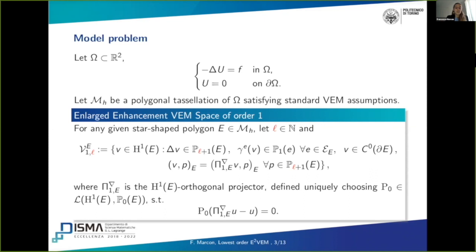We analyze the Poisson problem with the homogeneous Dirichlet boundary condition. In order to state the discrete formulation of the problem, we have to define a polygonal tessellation of our domain omega that has to satisfy the standard virtual elements assumptions. Then I want to give the definition of the local discrete space that we call enlarged enhancement virtual element space over the one.